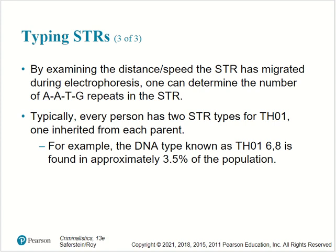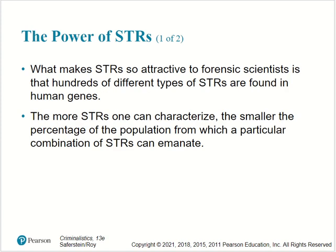Typically every person has two STR types for TH01, one inherited from each parent. For example, the DNA type TH01 6,8 is found in approximately 3.5% of the population. What makes STRs so attractive to forensic scientists is that hundreds of different types of STRs are found in human genes. The more STRs one can characterize, the smaller the percentage of the population from which a particular combination of STRs can originate.